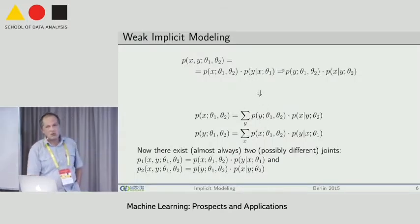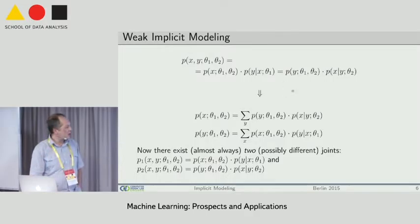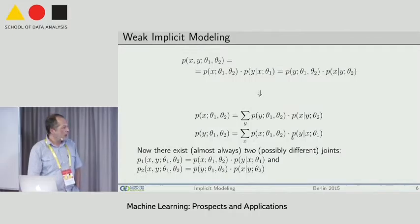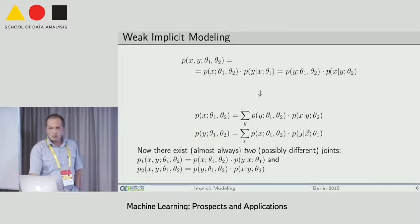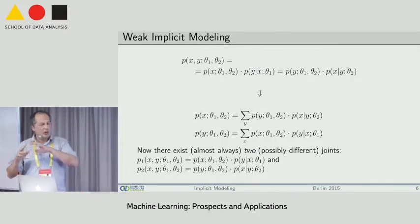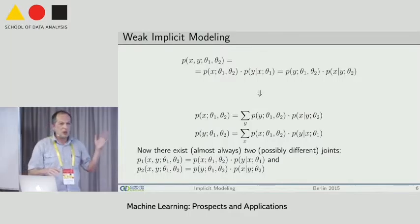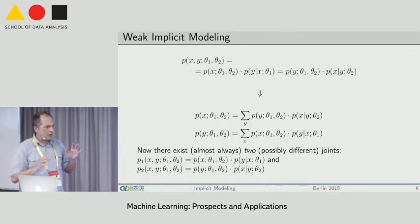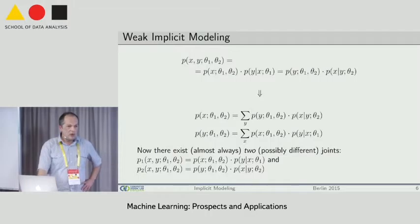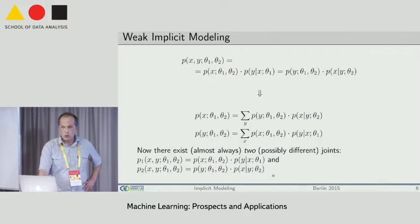This weaker condition defines what we call weak implicit modeling. It turns out that for each pair of conditional probability distributions — no matter how they are designed, even if one is a neural network and the other is a Gaussian mixture — as long as there are no zeros in the conditional probability distributions, there exist exactly two joint probability distributions satisfying this equation.